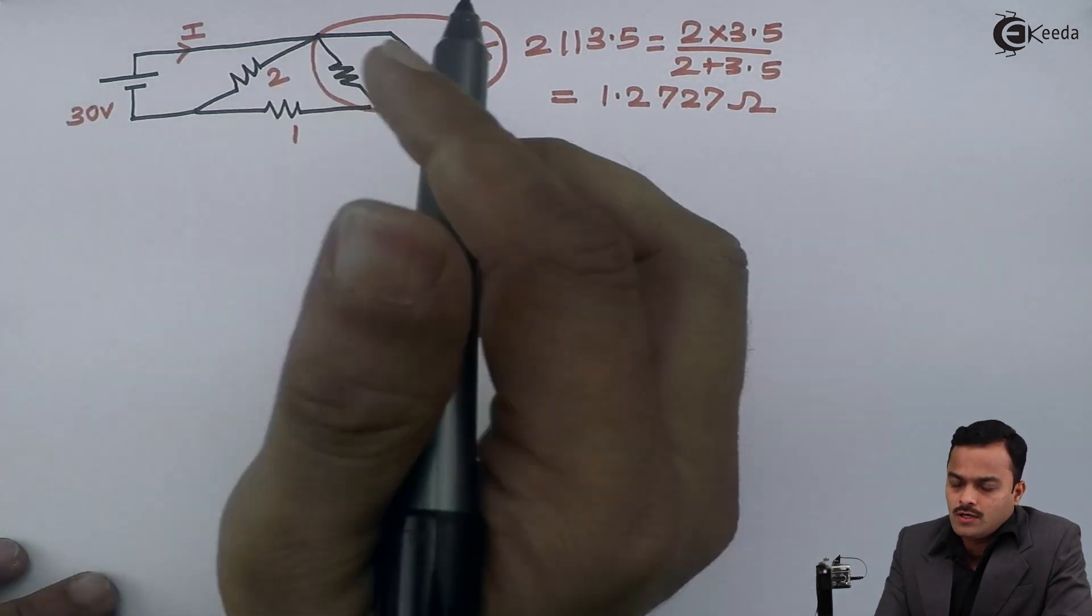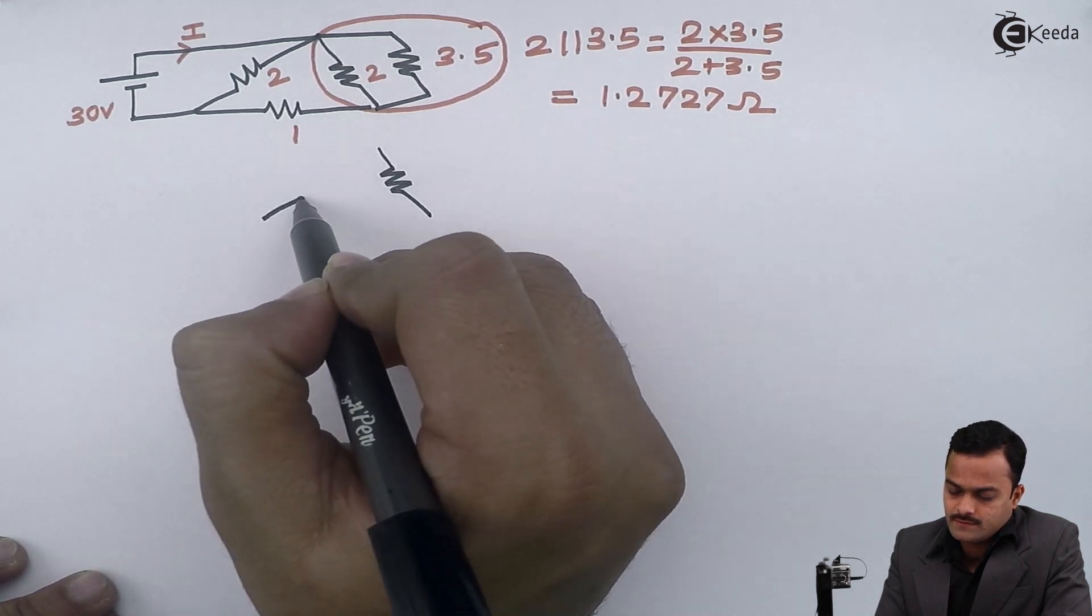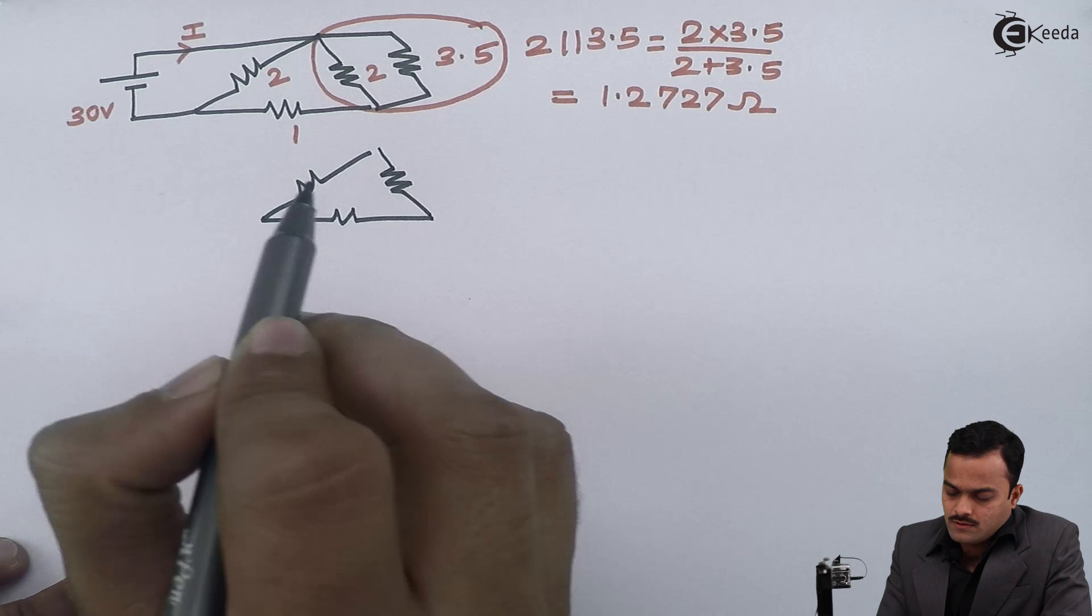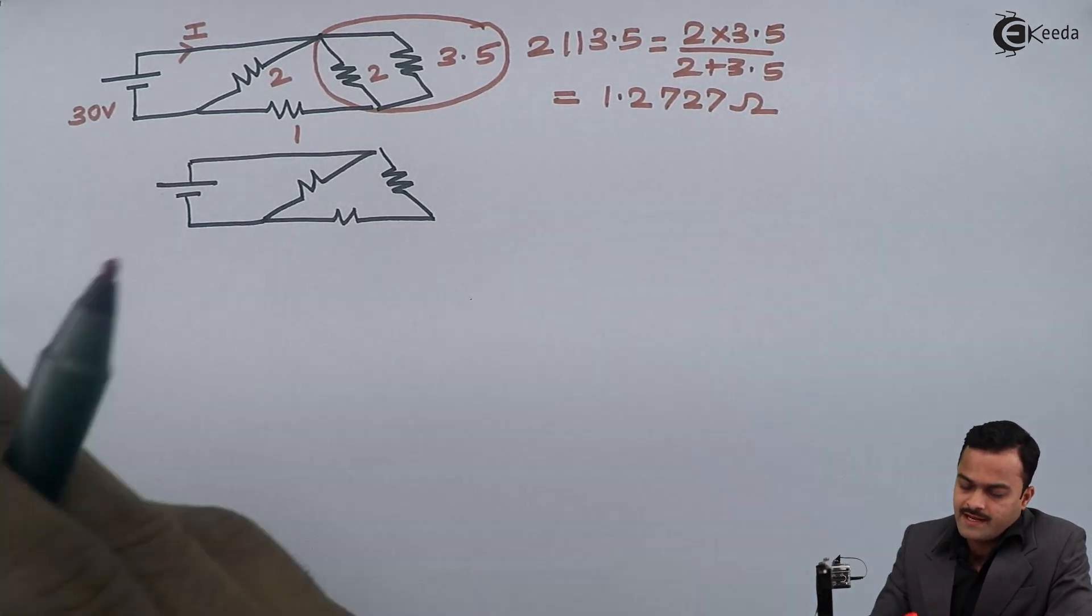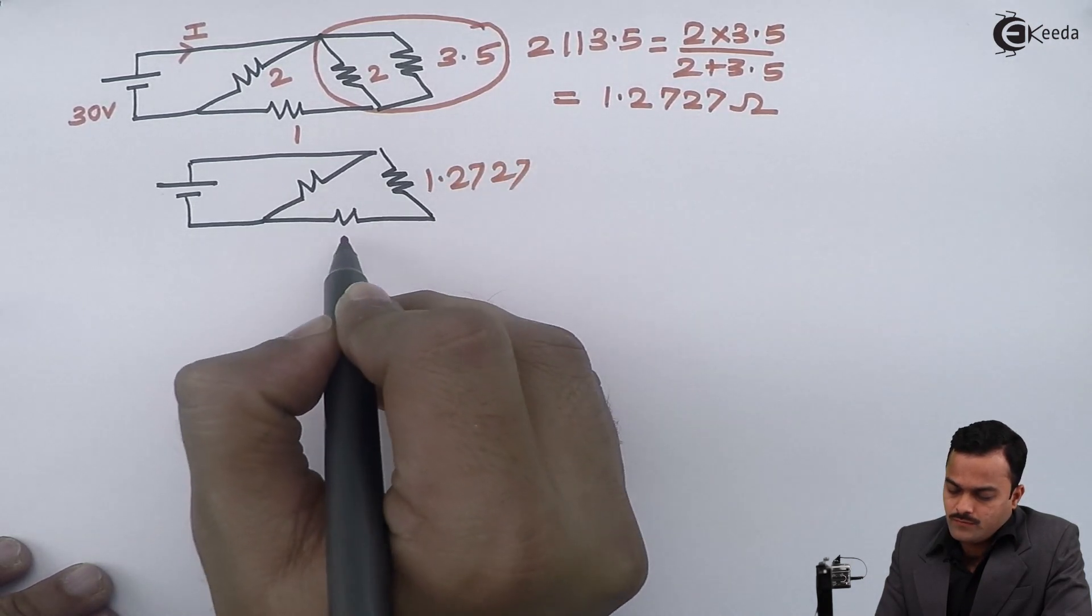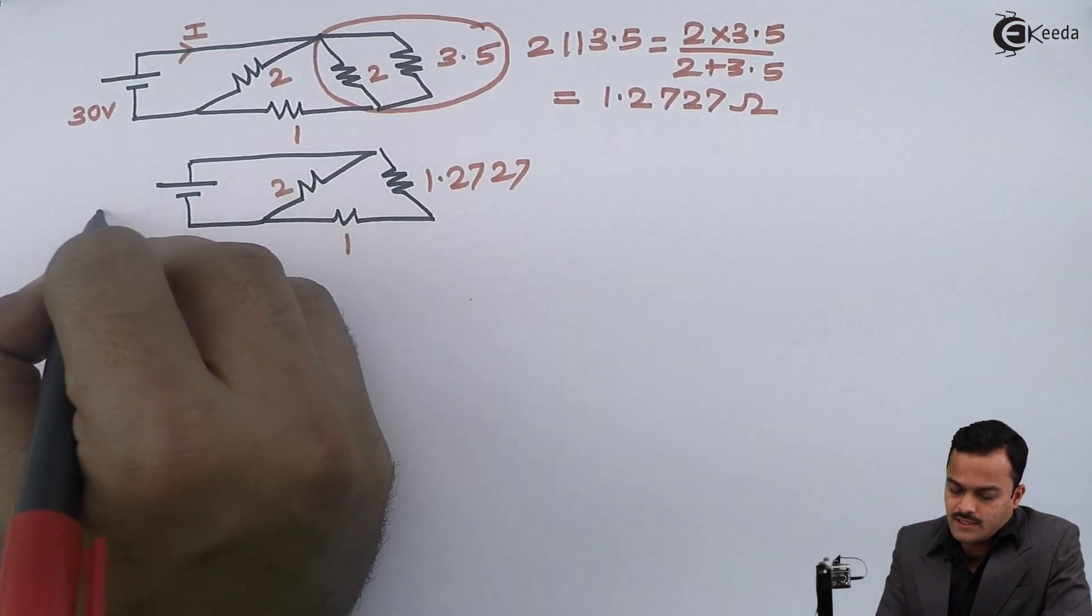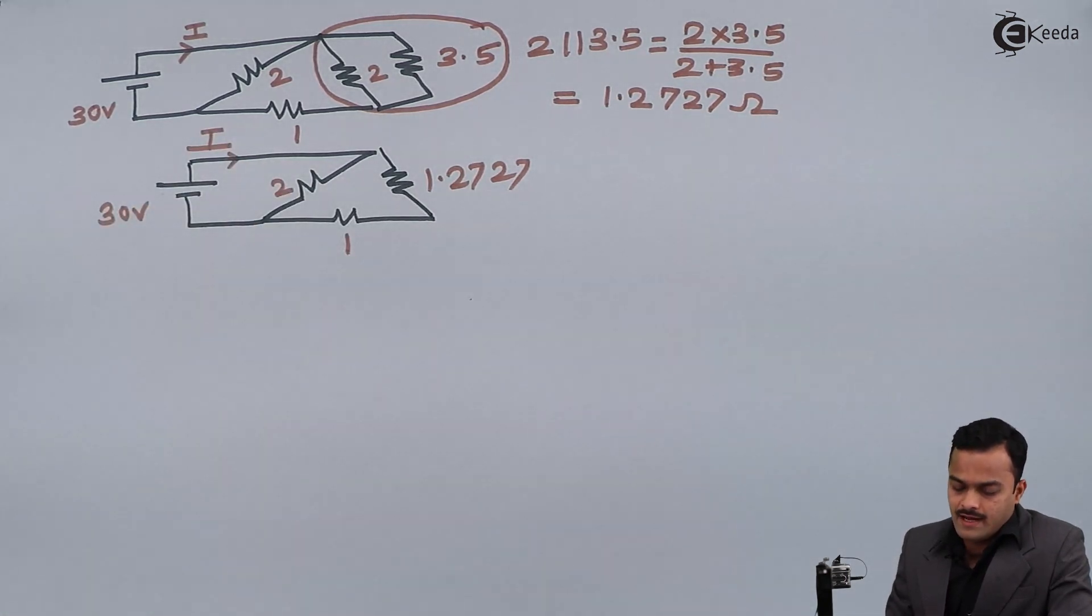So this parallel connection will give you 1.2727 ohm. After redrawing, I will get 1.2727 ohm, 1 ohm, 1 ohm, 2 ohm untouched, 30 volt battery remains as it is, and current given by the battery is I.